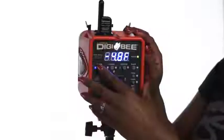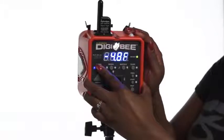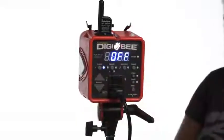If you would like to use the Digibee as a continuous light, you can turn off the flash feature by pressing and holding the flash button until 'off' shows on the Digibee's display. That means you've now turned off the flash and the Digibee can be used as a continuous light.